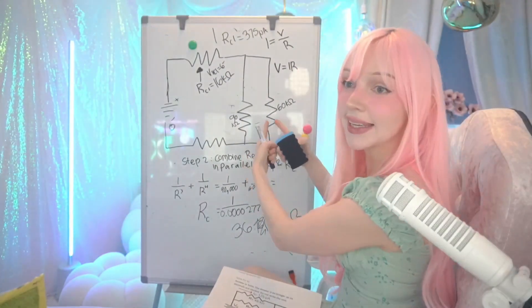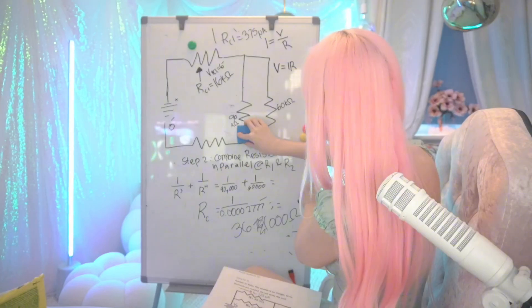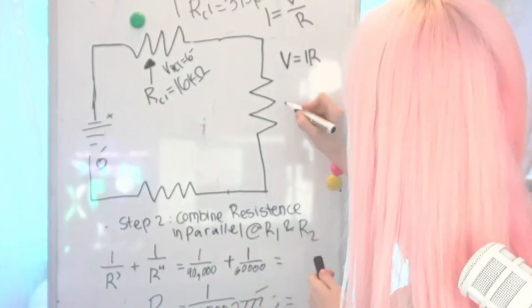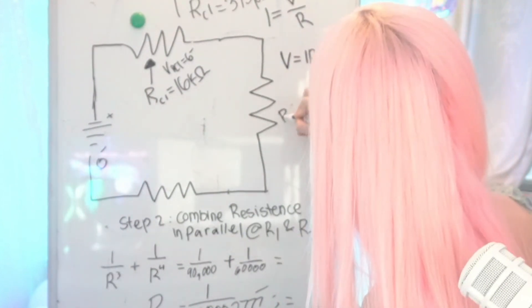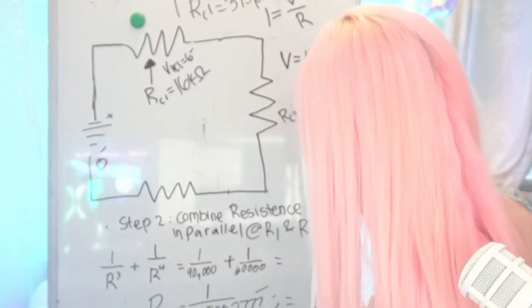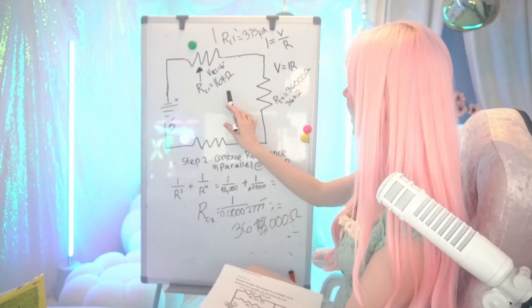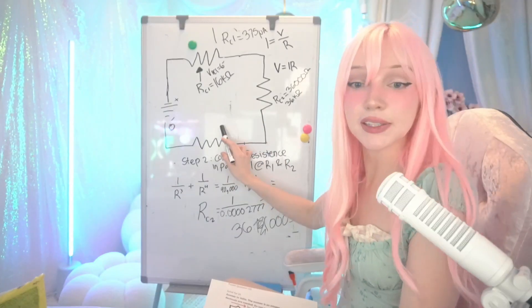Okay, so now we combined these resistors here. So we're going to erase this and we're going to redraw it. So then our resistance at this spot, Rc2 is going to equal 36,000 ohms. We got resistor, resistor. Now we got to solve for this resistor.